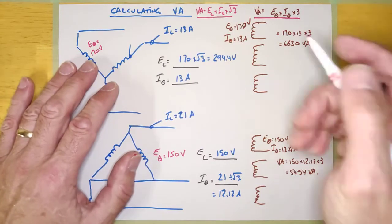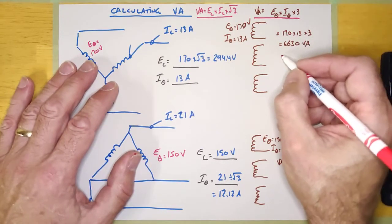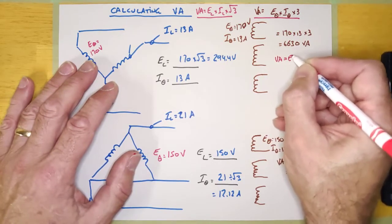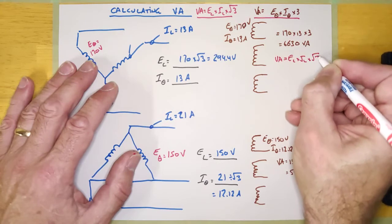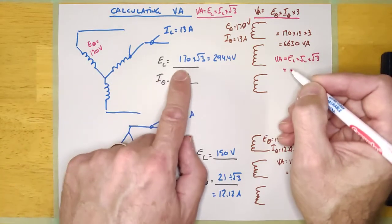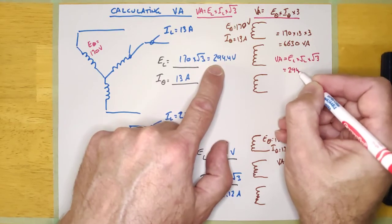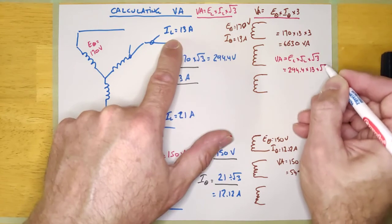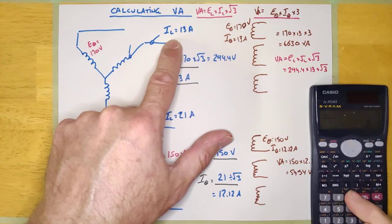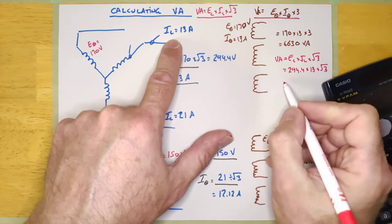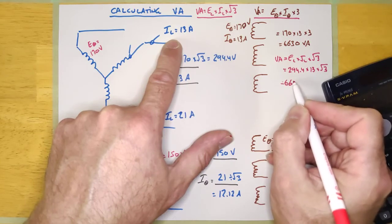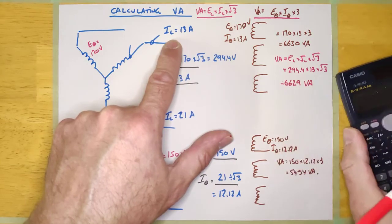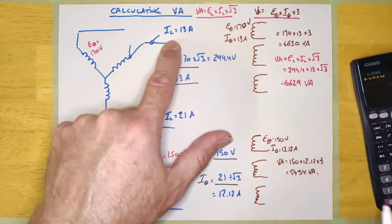Let's try that same formula using line values. VA = E_line × I_line × root 3. On this Y transformer, that's 294.4 times 13 times root 3, which gives us 6,629 volt amps — same as before.